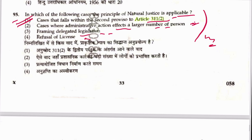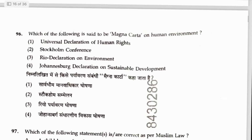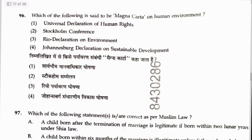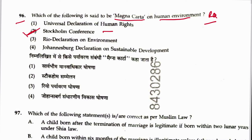Question 96: Which of the following is called the Magna Carta of the human environment? This is a repeat question. The Stockholm Conference is the answer. Answer is 2.